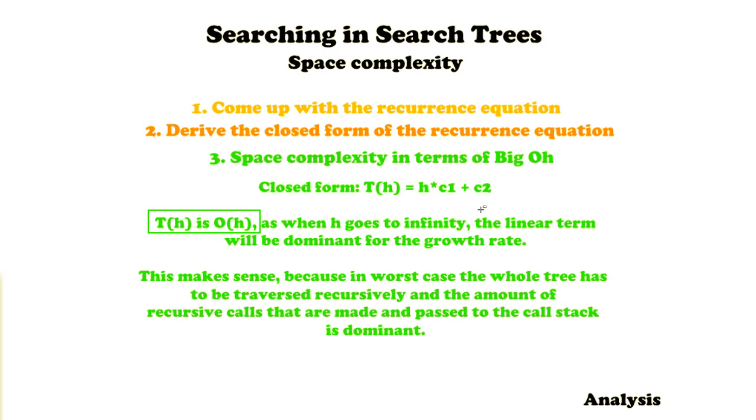And this actually makes sense because in worst case, when the node we're looking for is at the bottom of the tree, we have to move recursively throughout the whole tree in order to reach this node. In this case the amount of recursive calls that are made and are passed to the call stack is dominant, and this is actually equal to the height of the tree. So in worst case T(h) is O(h), and this is the space complexity in general for search trees.